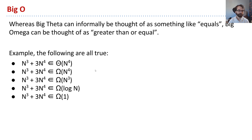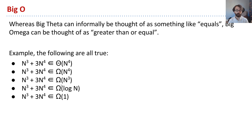For example, we know that n cubed plus 3n to the fourth is big theta n to the fourth — it has the order of growth n to the fourth. Similarly, we can say that that same function is big omega n cubed, because it grows at least as quickly as n cubed. It is also big omega log n, big omega constant, and actually also big omega n to the fourth, because this function grows at an equal rate — so it's greater than or equal.